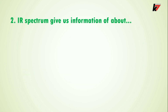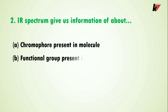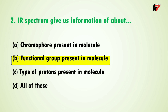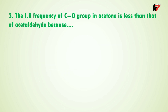Question 2: IR spectrum gives us information about — option A is chromophore present in molecule, option B is functional group present in molecule, option C is types of protons present in molecule, option D is all of these. The correct answer is option B: IR spectrum gives us information about the functional group present in the molecule.